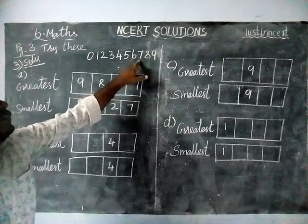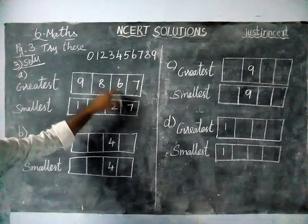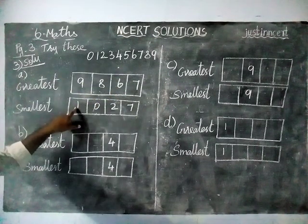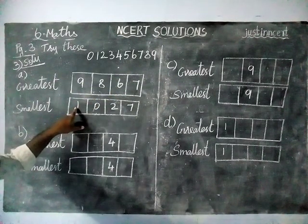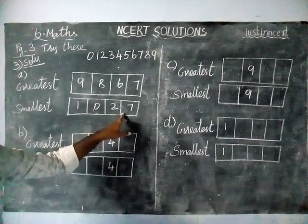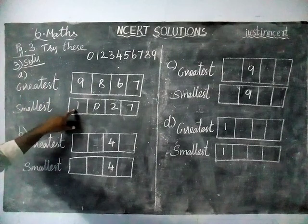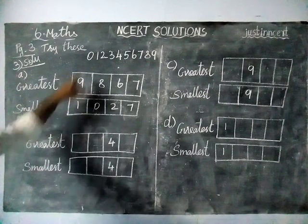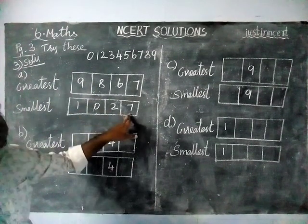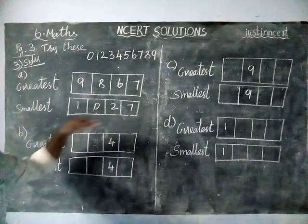So we cannot write 7, so we have chosen 6. Next number is 0 — we cannot write it in the first place, because if you write 0 it will become a 3-digit number. So we have chosen 1 in the first place, then 0, next number 2, then already in the book itself they have given the condition 7.